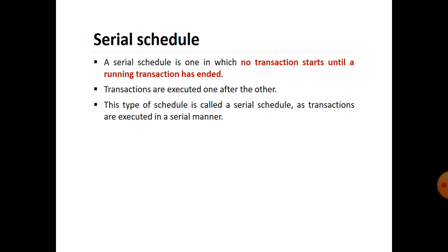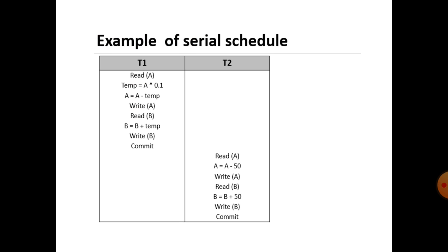Schedules can be divided into three major types. The first is a Serial Schedule: one in which no transaction starts until a running transaction has ended. Transactions are executed one after the other in a serial manner. In the example, we first complete transaction T1, and only after that do we start and complete transaction T2.